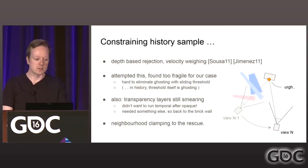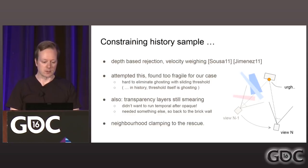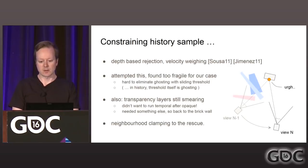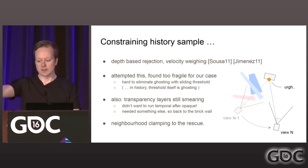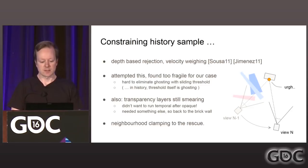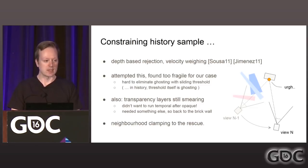There are various ways to constrain — depth-based rejection, velocity weighting. Sousa described this very well. I spent time implementing velocity weighting but found it was really fragile; the threshold itself was sliding in history and it was difficult to get right. It also doesn't handle transparency layers — we don't have velocities for those, and we have a lot of them interleaved between our opaque geometry layers due to volumetrics and artist-placed effects like sun rays. We didn't want to run temporal only after the opaque pass, so I went back to the drawing board. Then I read slides from Sousa, and the neighborhood clamping concept was a big rescue for us.